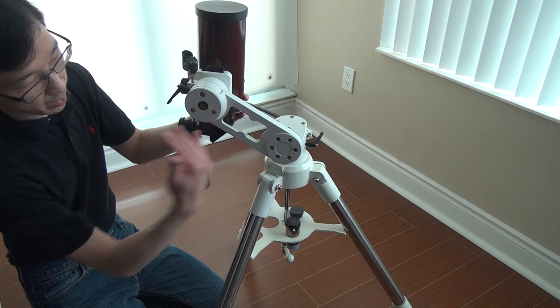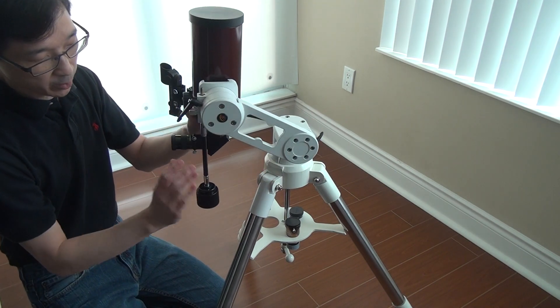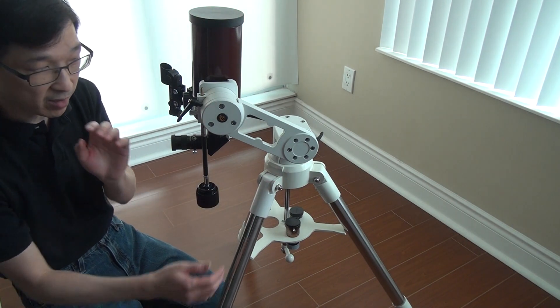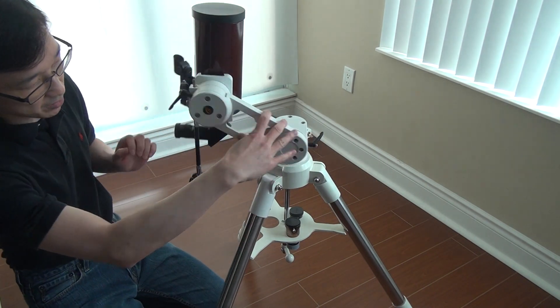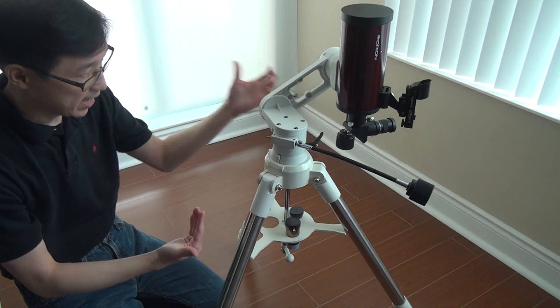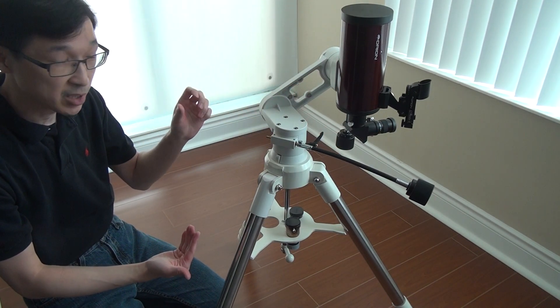And you can also mount it the other direction, depending if you want to use your right hand for the knobs or your left hand. Because in the other direction obviously it'll be in this position, so then your knob hand, the micro-motion adjustment, will be here.